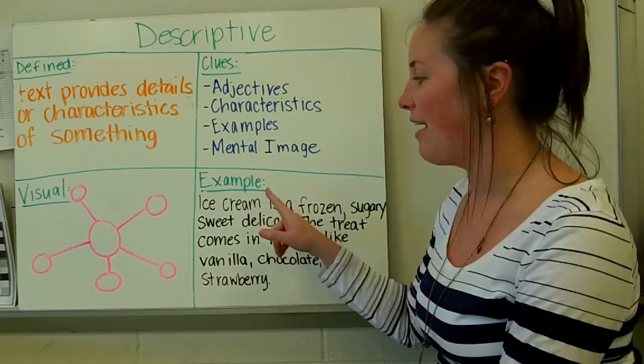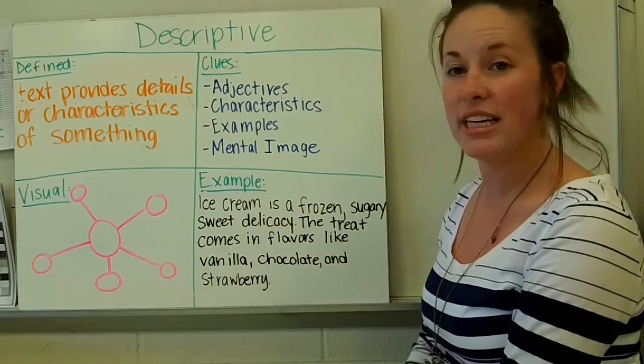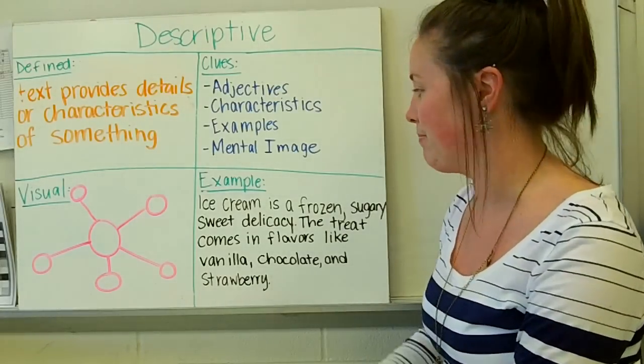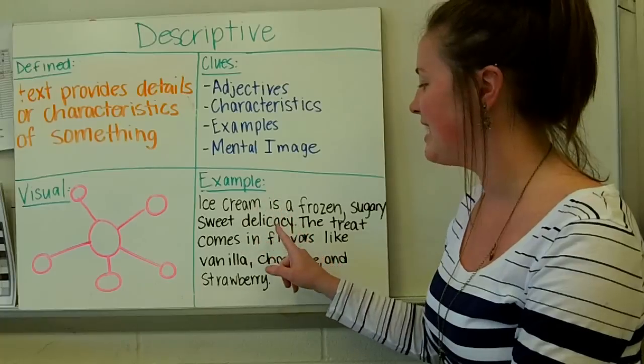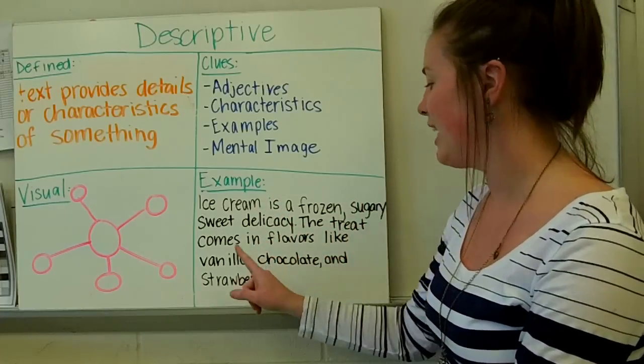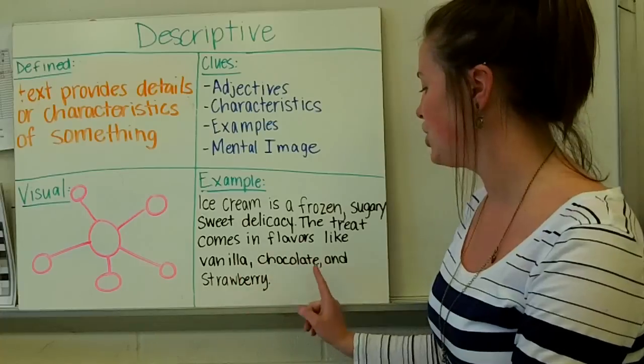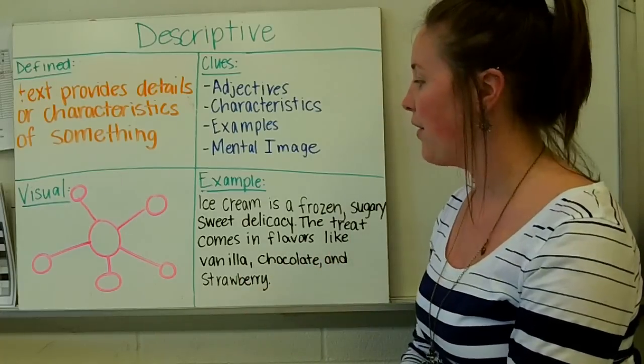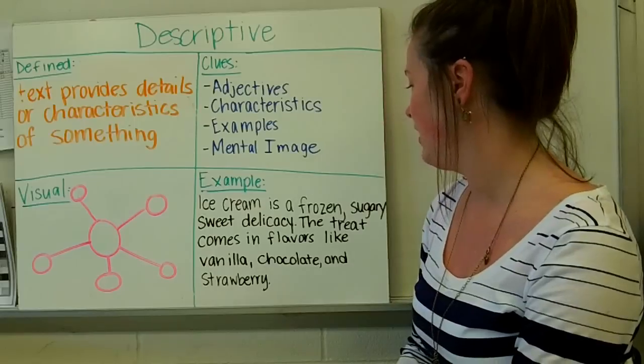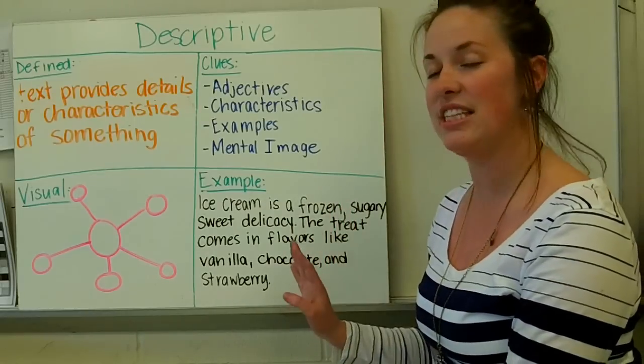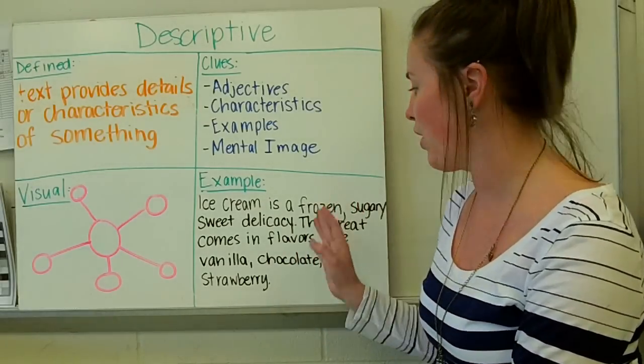And the last thing we're going to have is an example. So here's my example. I did all my examples based on ice cream. Ice cream is a frozen, sugary, sweet delicacy. The treat comes in flavors like vanilla, chocolate, and strawberry. So if I were doing a bubble map on this one, I would put ice cream in the middle and then I could find different adjectives and characteristics that describe ice cream.